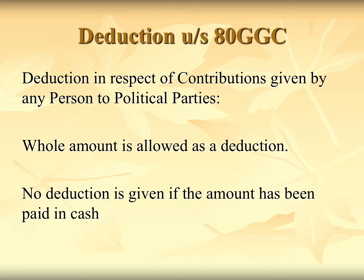Section 80 GGC allows a deduction in respect of contributions given by persons to political parties. The amount of deduction will be the entire amount paid by the person to the political party. Again, the condition is that the deduction will be allowed only if the amount has not been paid in cash — that is, no deduction is given if the amount has been paid in cash.